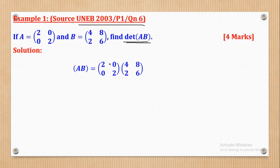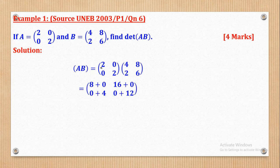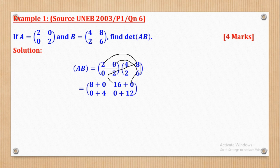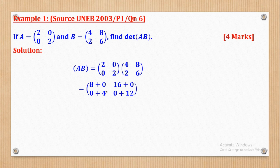To find AB, we multiply Matrix A by Matrix B using row by column multiplication. First row, first column: 2 times 4 is 8, plus 0 times 2 is 0. First row, second column: 2 times 8 is 16, plus 0 times 6 is 0. Second row, first column: 0 times 4 is 0, plus 2 times 2 is 4. Second row, second column: 0 times 8 is 0, plus 2 times 6 is 12.